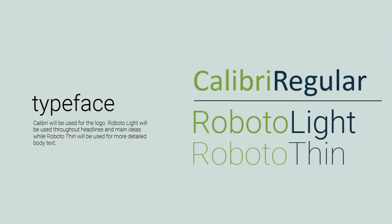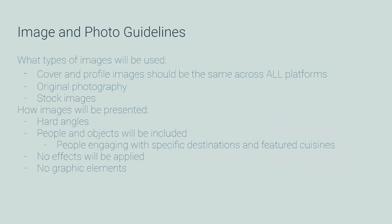Now I'll pass it on to Julia for image and photo guidelines. For the image and photo guidelines, the type of images that will be used for the cover and profile images will be the same across all platforms. We will use original photography and stock images, and these images will be presented with hard angles. In the images, people and objects will be included — typically images of people engaging with specific destinations and featured cuisines. There will be no effects and no graphic elements.